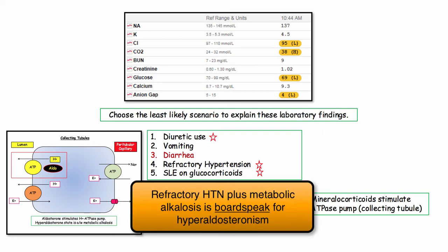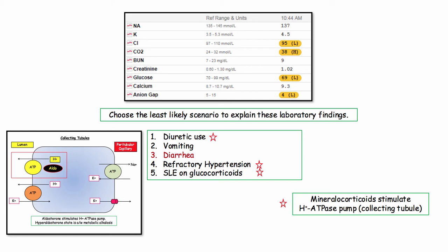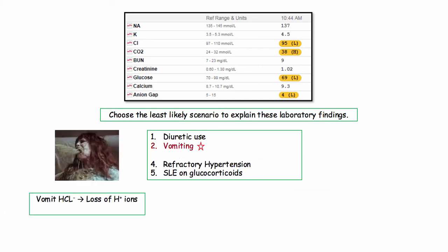In this discussion, you were only given high bicarb and refractory hypertension. This is board speak for hyperaldosteronism. Whether you recognize that association or not, it didn't really matter, as diarrhea was clearly the odd man out. In so far as vomiting, pretty straightforward. You puke up hydrogen ions. Less hydrogen ions leads to an alkalotic state.